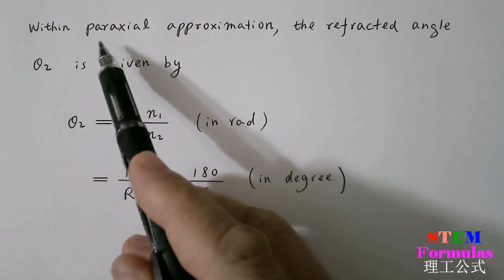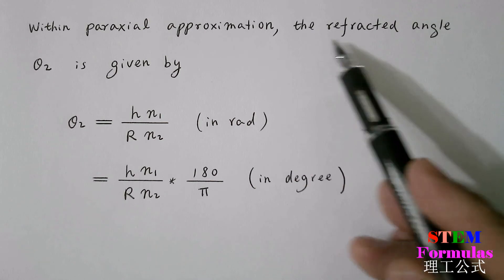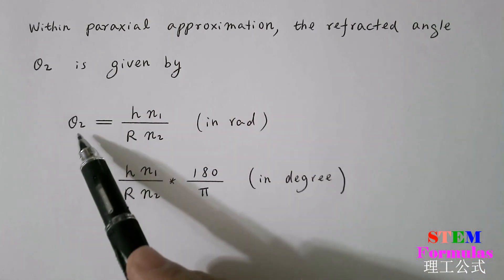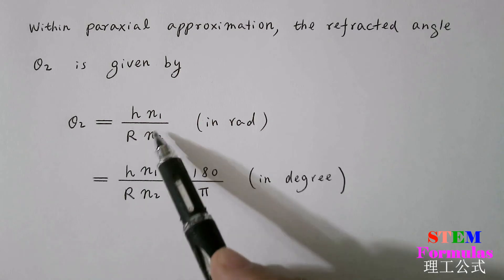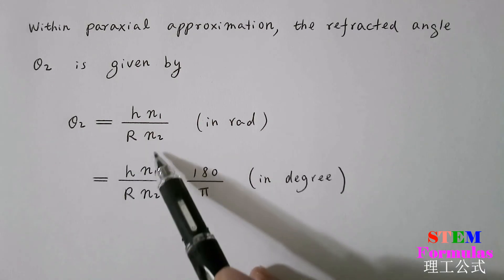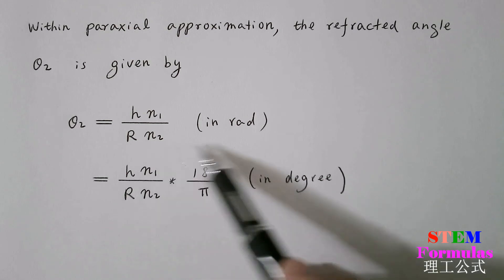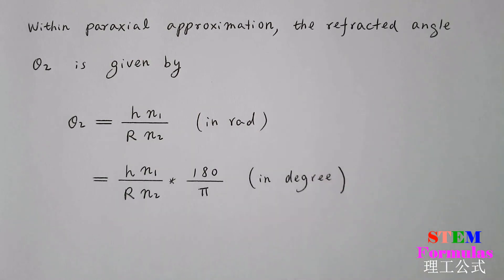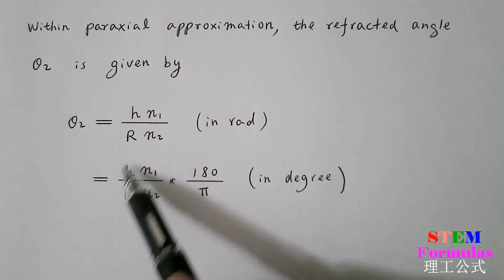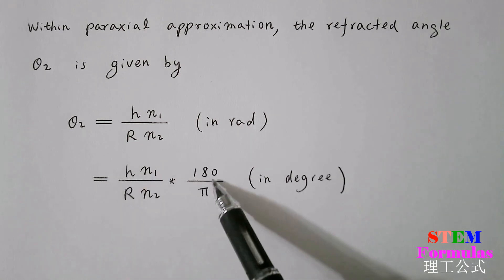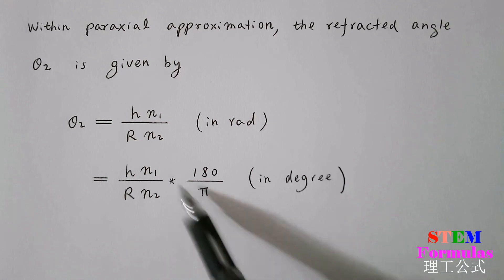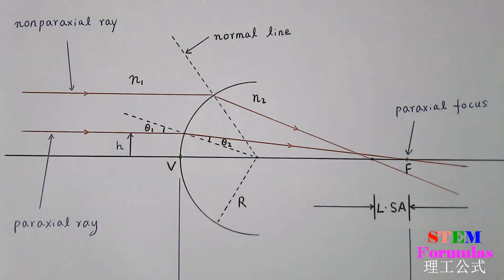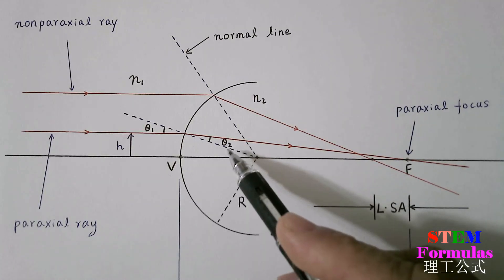Within paraxial approximation, the refracted angle θ₂ is given by θ₂ equals h times N₁ divided by R times N₂. This expression is in radians. If you want to change it to degrees, this expression times 180 divided by π. This expression is for θ₂ in degrees. And θ₂ is here.